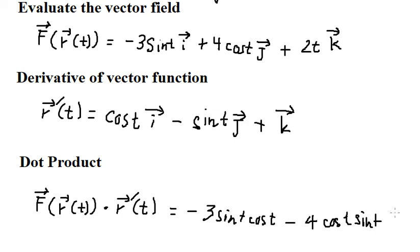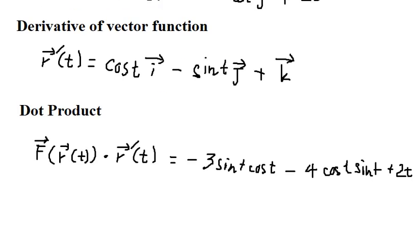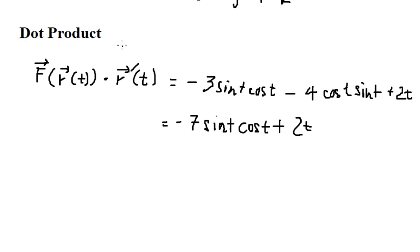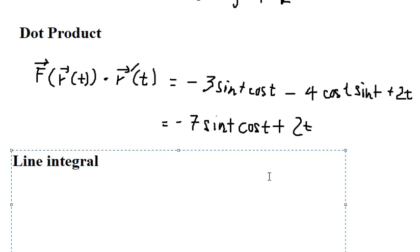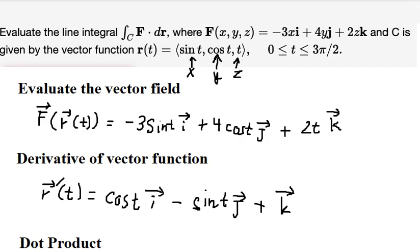2t and one. We have 2t. So we simplify. Now we can use the line integral.